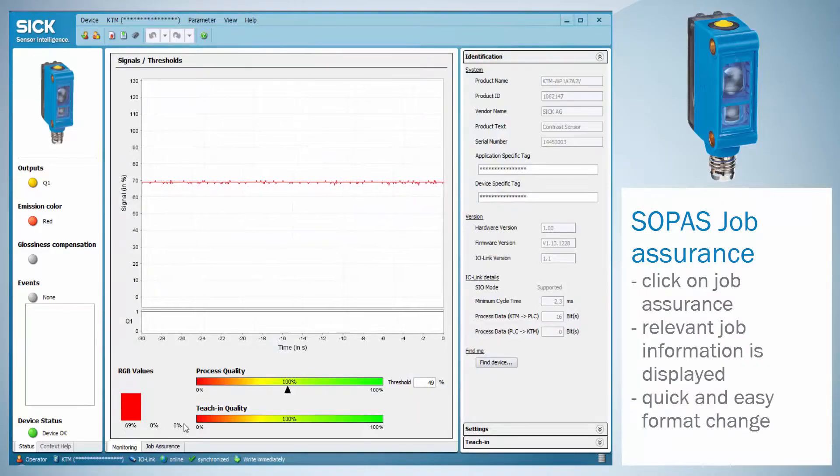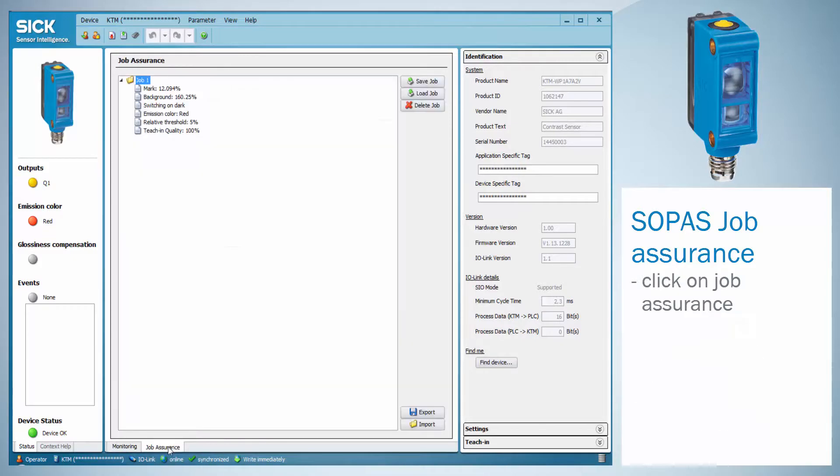The stored values for a certain job can be exported and stored by using the job assurance flag. The job contains the information about the remission of the mark in the background as well as the switching mode, light or dark switching, the set relative threshold, as well as the teach-in quality and the emission color. The job assurance mode assures a quick and easy format change during production.